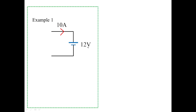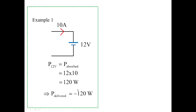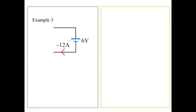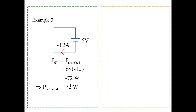Let us look at examples for power absorbing and power delivering. In example 1, 10 amperes enters 12 volts, so power absorbed = 10 × 12 = 120 watts; power delivered = minus 120 watts. In example 2, 4 volts with 2 amperes leaving the positive terminal gives power delivered = 8 watts, so power absorbed = minus 8 watts. In example 3, a 6-volt source with minus 12 amperes entering the positive terminal gives power absorbed = minus 72 watts, and power delivered = 72 watts.